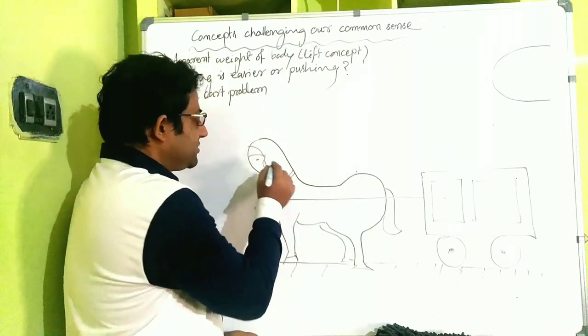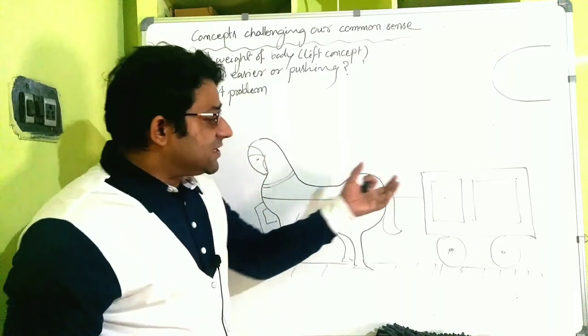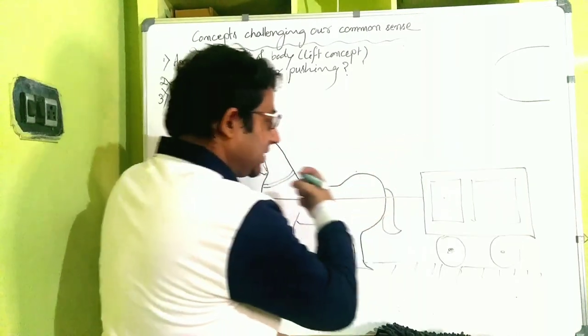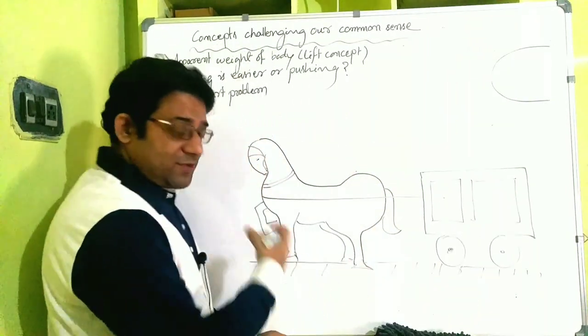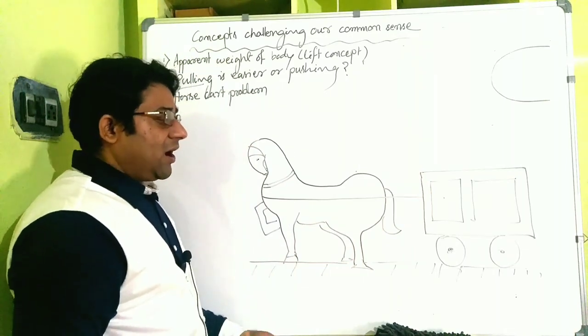The confusion is like this: let's say when a horse pulls a cart, the horse is giving one action on the cart, and in return the cart is pulling the horse back, which is giving one reaction on the horse.